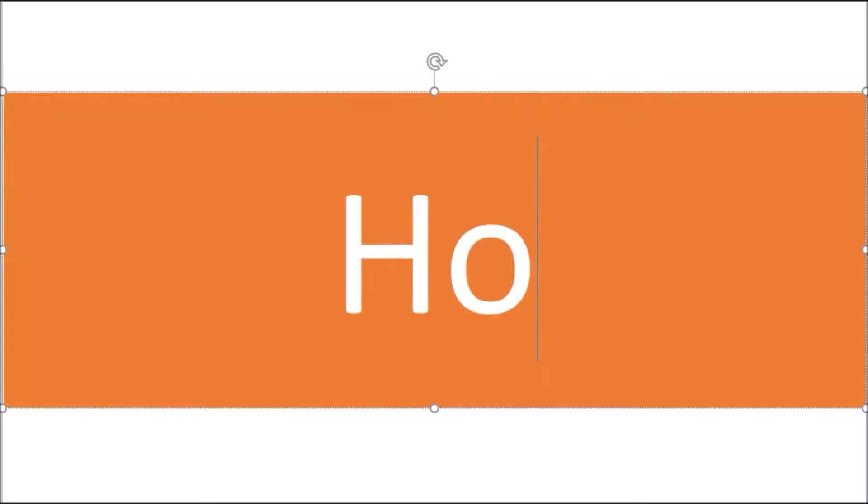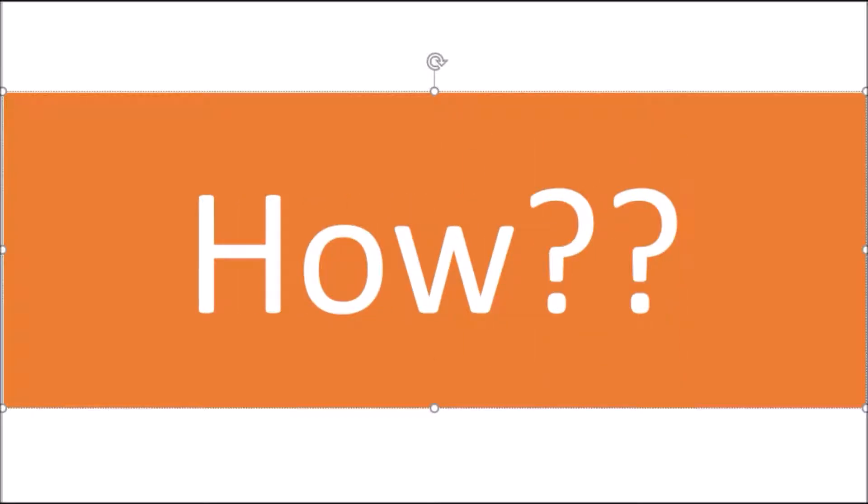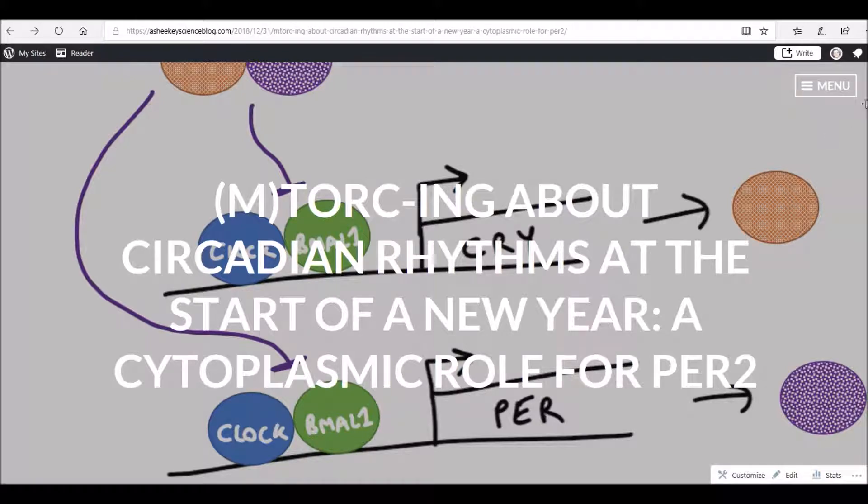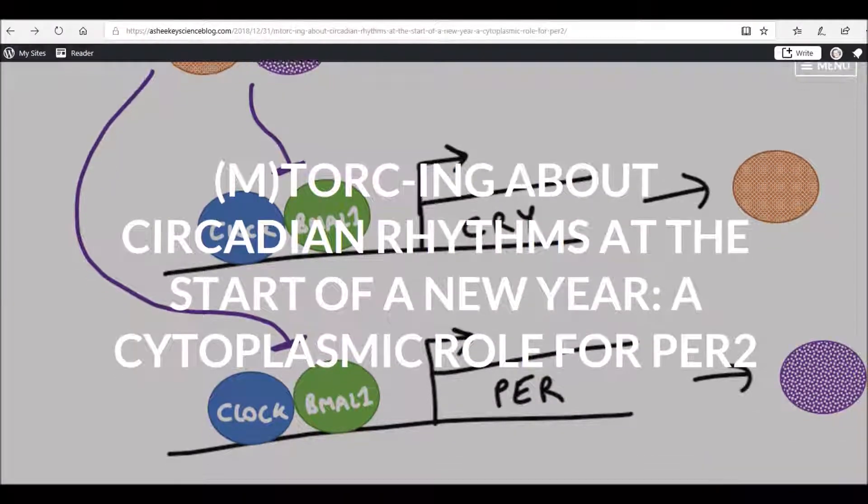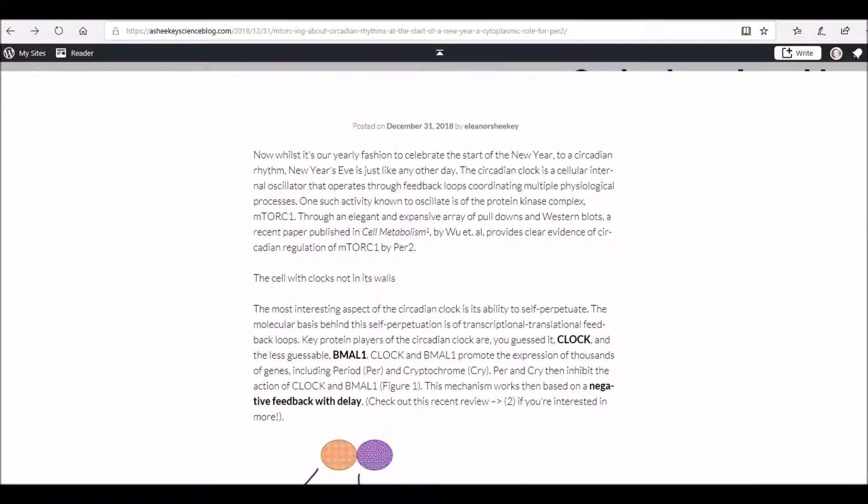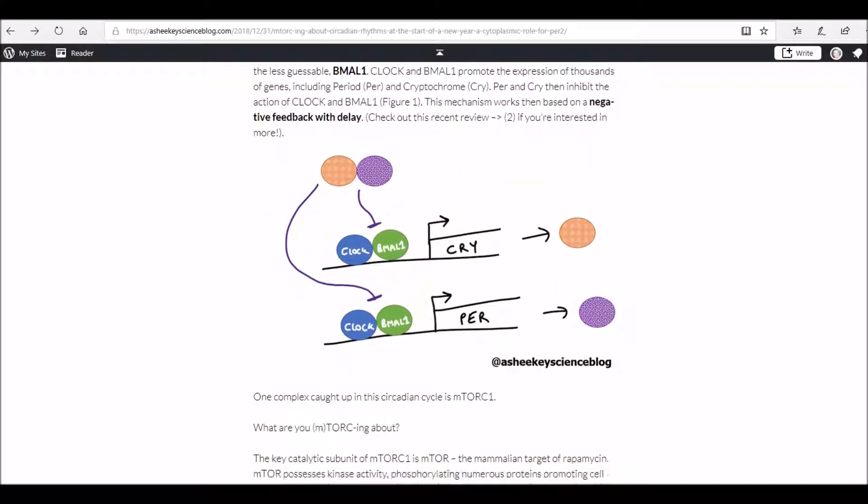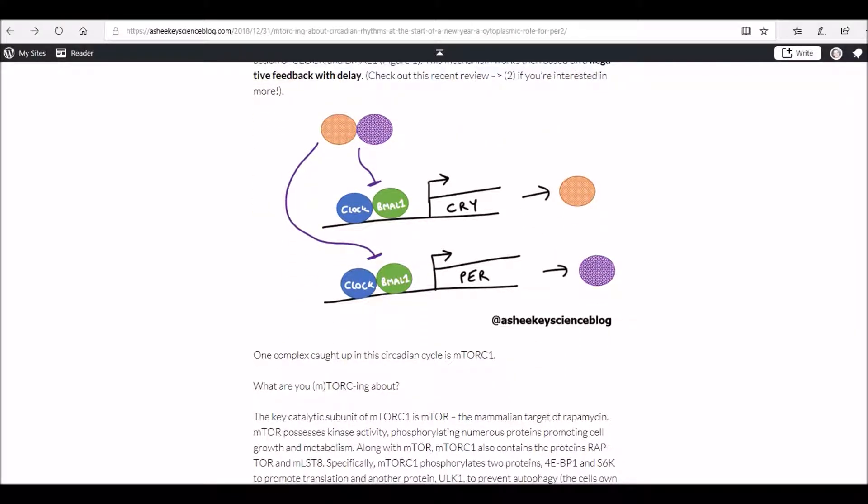But how does this regulation actually come about? Within a cell, there are a series of protein factors that coordinate the 24-hour regulation of the different processes within the cell.